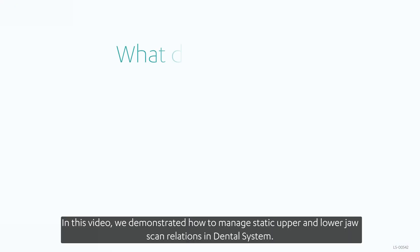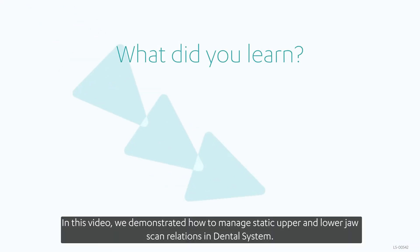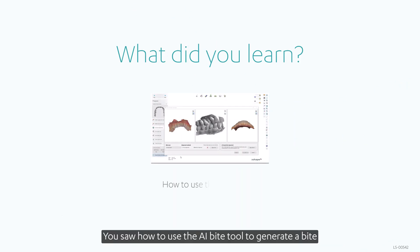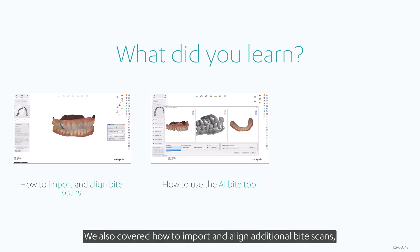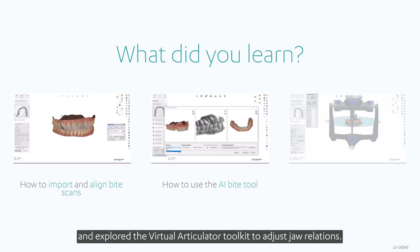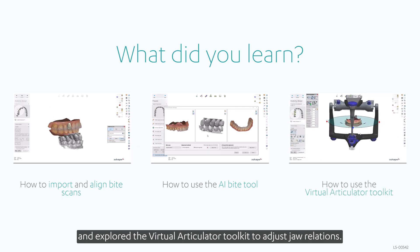In this video, we demonstrated how to manage static upper and lower jaw scan relations in Dental System. You saw how to use the AI Byte tool to generate a bite when a registration is missing or potentially inaccurate. We also covered how to import and align additional byte scans and explored the Virtual Articulator toolkit to adjust jaw relations.